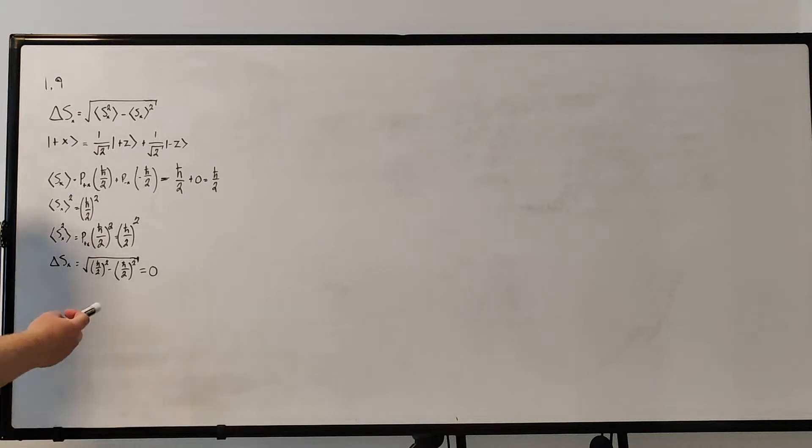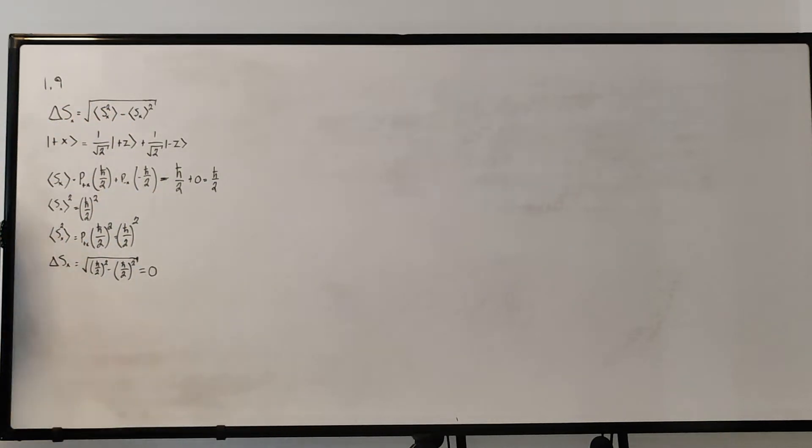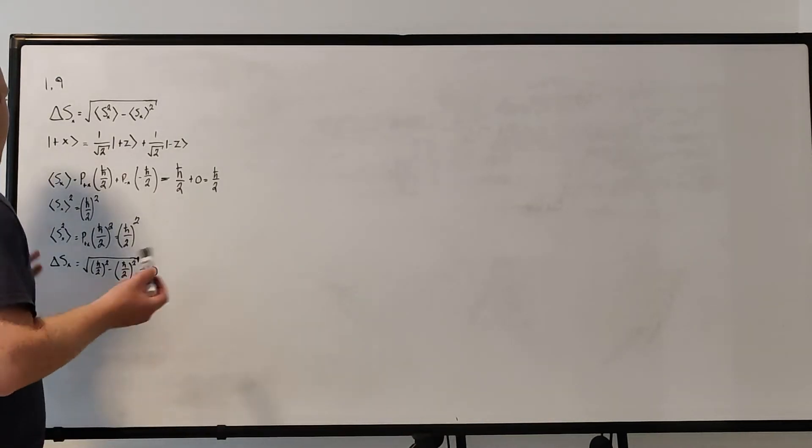So what that essentially means is the uncertainty equation is the square root of the expectation value of the spin component squared minus the square of the expectation value of the spin component of spin. So let's just get into it.